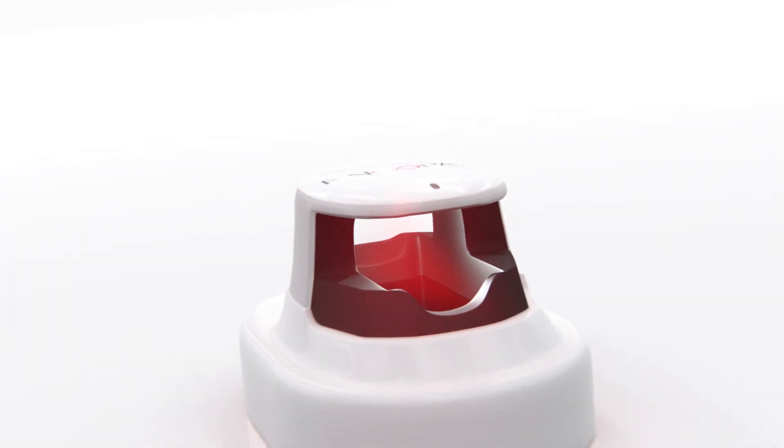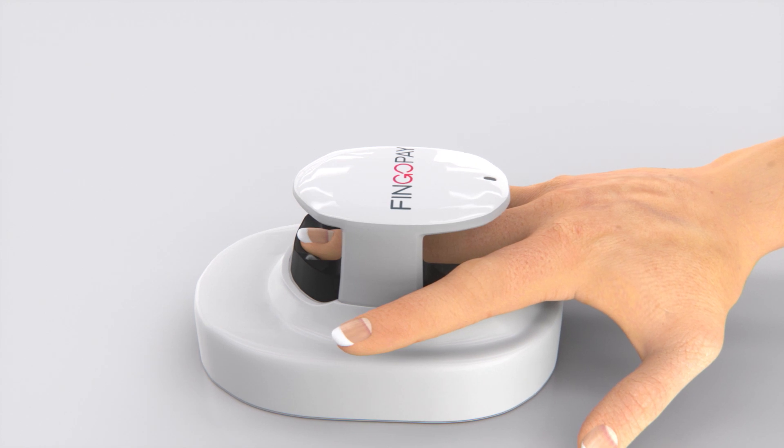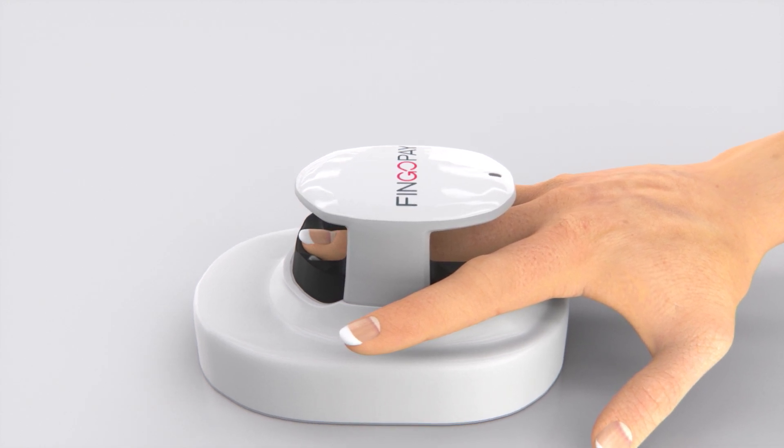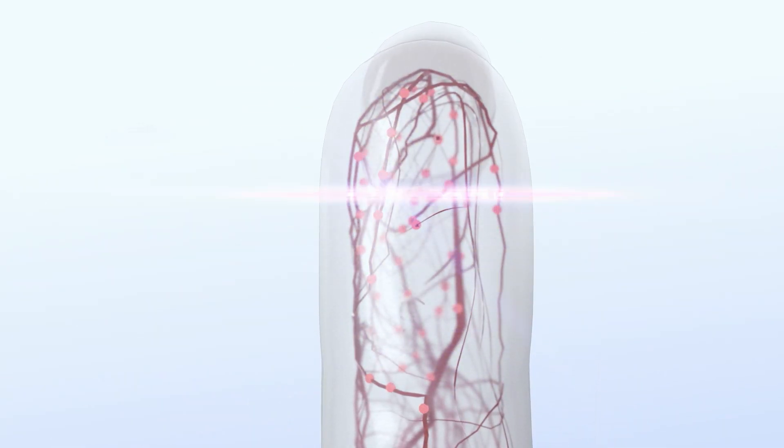Harmless infrared light maps the 3D pattern of your veins. As finger vein patterns are inside the body and invisible from the outside, unlike fingerprints they leave no trace and cannot be copied. It is an ideal biometric for high security authentication.